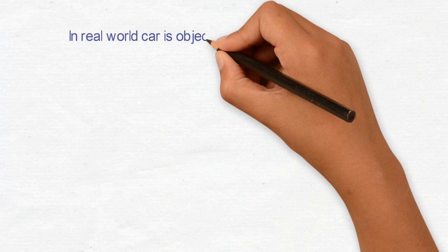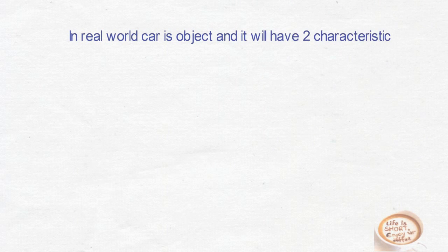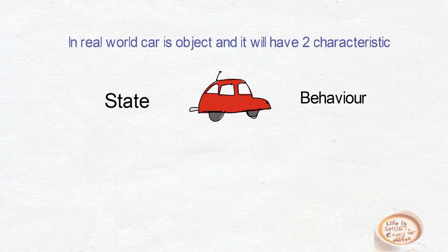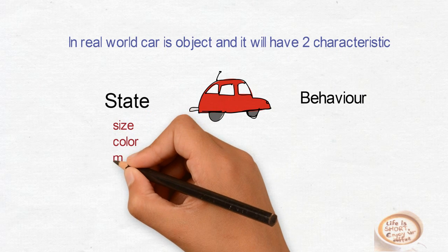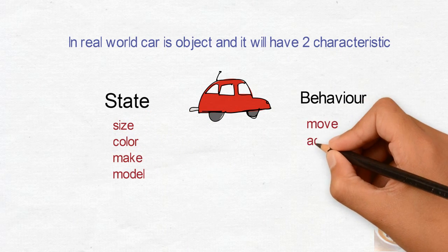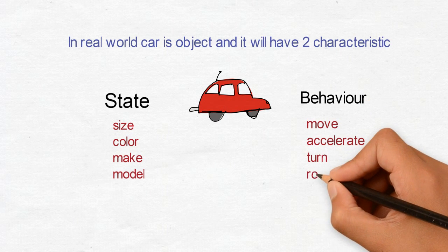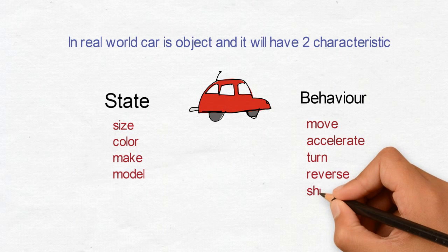In real world, you can say that car is an object and it will have two characteristics. Number one is the state and number two is behavior. So the state can be its size, color, make and model, and behavior can be move, accelerate, turn, reverse, shift, etc.